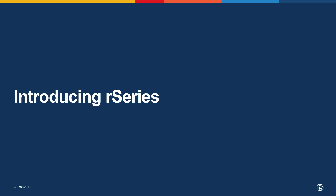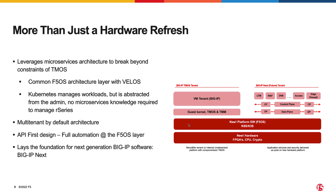The R-Series is F5's next generation appliance-based solution that replaces the current I-Series platforms. R-Series platforms have many advantages over the current I-Series architecture. A major difference is the introduction of a new Kubernetes-based platform layer called F5OS, which allows for some exciting new capabilities. F5OS leverages a microservices architecture with an underlying Kubernetes framework for management that is abstracted from the administrator.